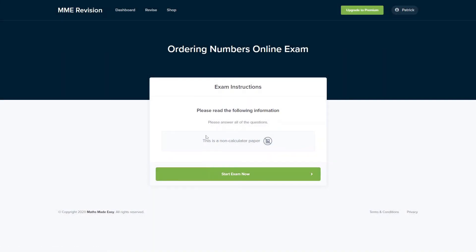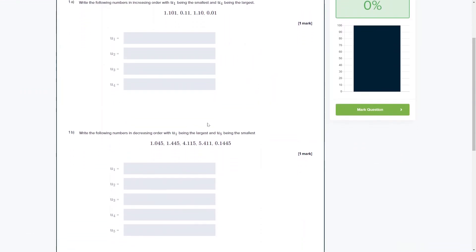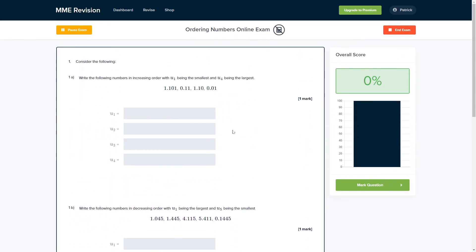If you're feeling ready to test yourself with some ordering numbers questions, you can do so with our online exam. This is available through our revision platform. And if you take the test, you'll find loads of different questions to have a go at, and you'll get instant feedback on each and every one of them. So it's a really good way of keeping track of your progress, finding out where you're going wrong and so on, and it will help you prepare for your exam. So if this is something you're interested in, you can click the link below and it will take you there.